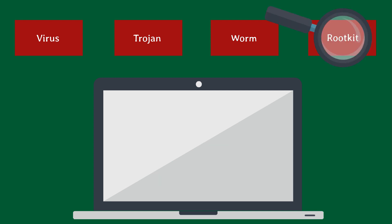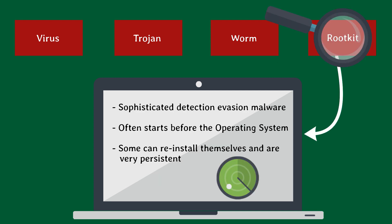Rootkits are a bit newer style compared to the first three more traditional types of malware. Rootkits are very sophisticated at avoiding detection and remaining on a system. They often exist on the computer outside of the operating system's vision and can't be detected by traditional means. Also, many rootkits will reinstall themselves after having their core files deleted, making them a very persistent threat on infected machines.